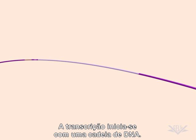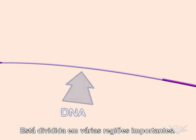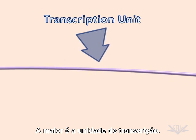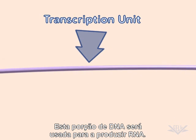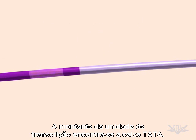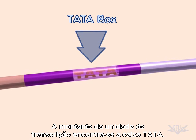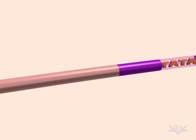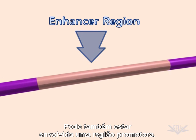Transcription begins with a strand of DNA, which is divided into several important regions. The largest of these is the transcription unit — the portion of the DNA that will be used to produce RNA. Upstream of the transcription unit is the TATA box. An enhancer region may also be involved.